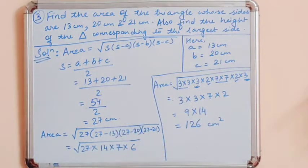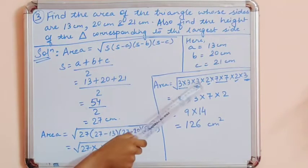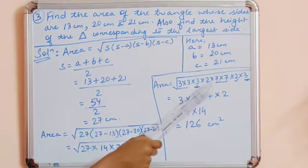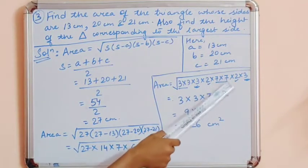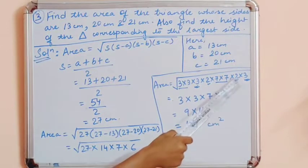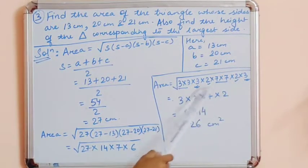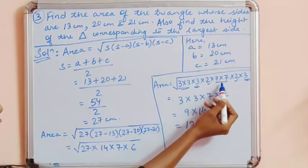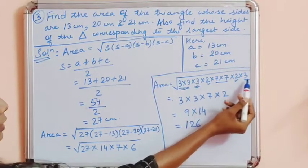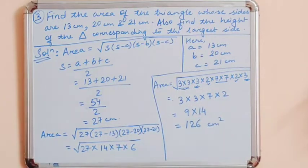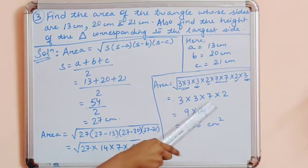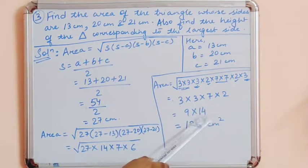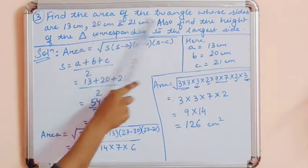The factors are: 27 = 3×3×3, 14 = 2×7, and 6 = 2×3. Taking out pairs: one pair of 3, one pair of 7, one pair of 2, leaving 3 inside. So the result is 3 × 3 × 7 × 2 = 9 × 14 = 126 cm². This is the area and the answer to the first part.